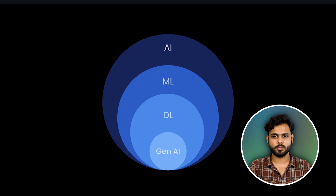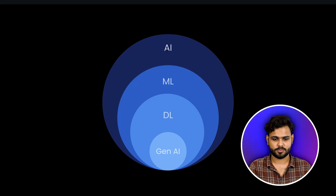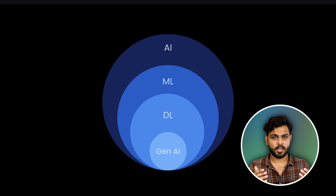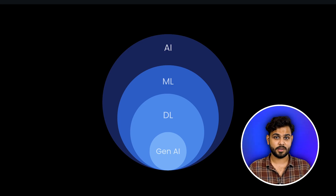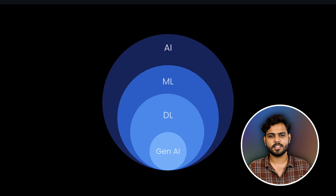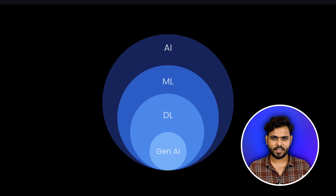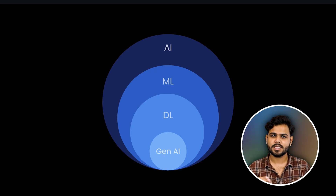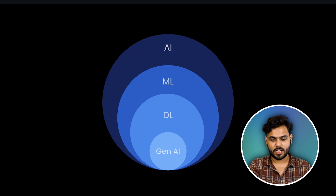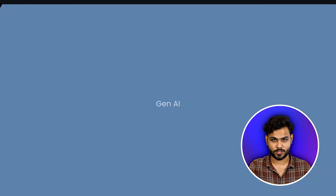This is a chart you might have seen somewhere. Inside AI, we have a subset ML; inside ML, we have a subset Deep Learning; inside Deep Learning, we have a subset Generative AI. So Generative AI, which is the whole boom nowadays, is just a subset of AI. In AI we have a lot of other algorithms as well, but nowadays Gen AI is an ocean on its own.